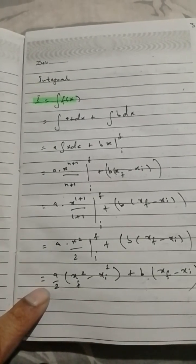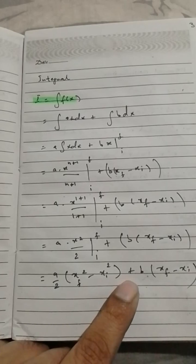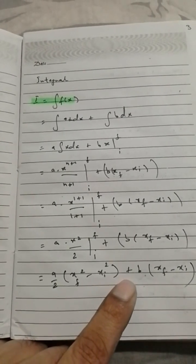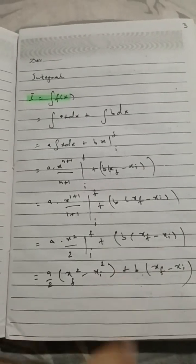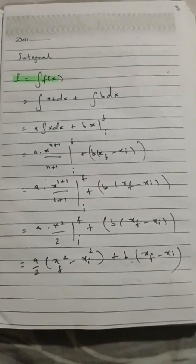Plus b(xf - xi). This is pretty simple, just the very basics of anti-derivative or integration, but not bad to refresh.